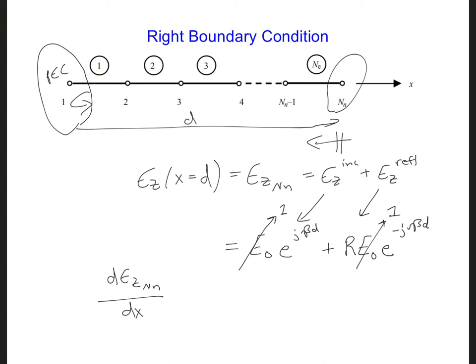Since we have an expression for ez at the right boundary of the grid, we can figure out what to set this term equal to, which is the derivative of ez, if we take the derivative of this equation for ez on the right boundary of the grid.